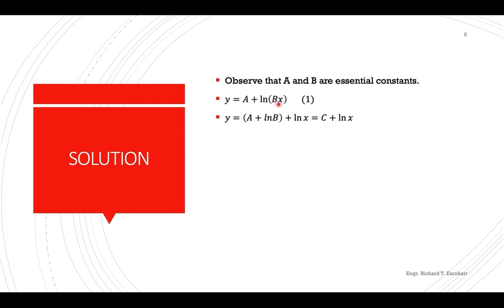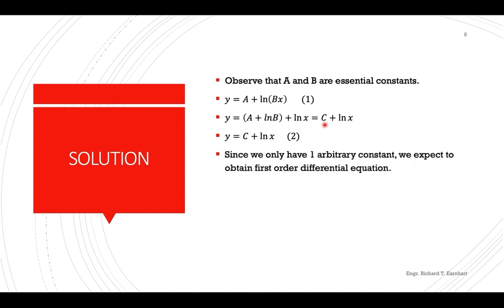Splitting ln(bx) into ln(b) plus ln(x), and since a and ln(b) are both constants, you can replace this combination by a single constant. Thus, the equation becomes y equals c plus ln(x), and we only have one arbitrary constant, so we expect to obtain a first-order differential equation.